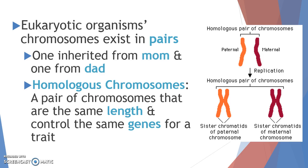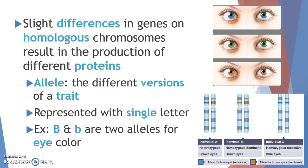Homologous chromosomes control the genes for the same trait. For example, the first and longest chromosome might contain gene sequences for height and hair color, or for whether your earlobes are attached or whether you can roll your tongue. There are slight differences in our genes, and those slight differences produce slightly different proteins for traits like height and hair color.